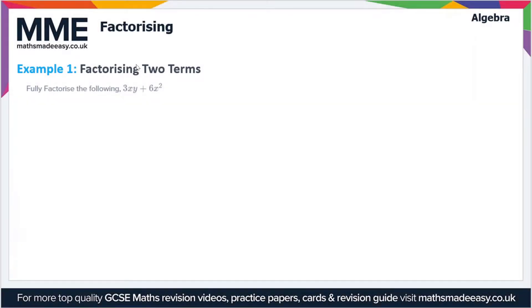So let's have a look at a couple of examples. We have to fully factorise 3xy plus 6x squared. Let's look at the numbers in front of the letters first of all. So we've got a 3 here and a 6 here. Are there any common factors of 3 and 6? Yes there are.